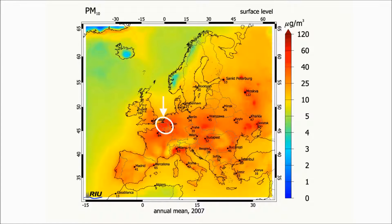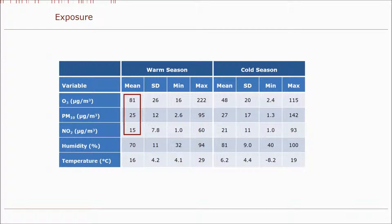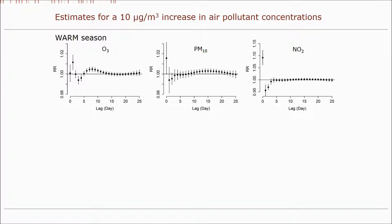Belgium is one of the most polluted countries in Europe. The average concentrations of ozone, PM10, and NO2 in the warm season were 81, 25, and 15 micrograms per cubic meter respectively. The corresponding concentrations in the cold season were 48, 27, and 21 micrograms per cubic meter. This figure shows the estimated relative risks of dairy cow mortality for a 10 microgram per cubic meter increase in air pollutant concentrations.